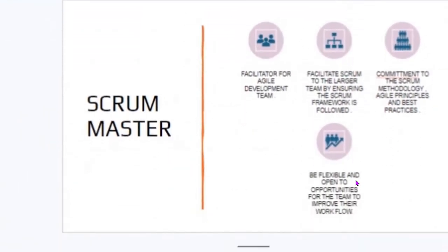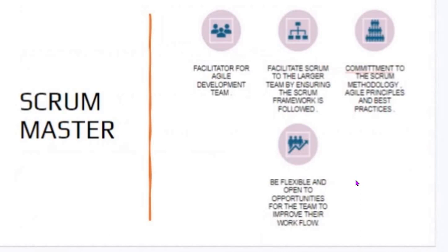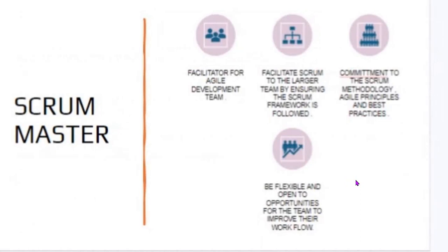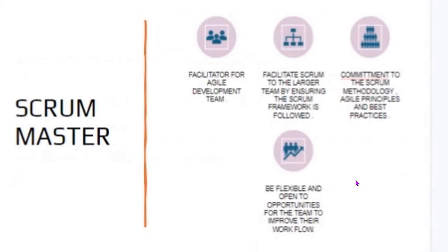What is the role of Scrum Master? A Scrum Master is a facilitator for an Agile development team. It coordinates the Agile development team on the Jira platform. Second, it facilitates Scrum to the larger team by ensuring the Scrum framework is followed and that the whole team adheres to Agile methodology. Third, it ensures commitment to the Scrum methodology, Agile principles, and best practices, making sure the team doesn't deviate while completing a project. Fourth, it is flexible and open to opportunities for the team to improve their workflow. Being a Scrum Master doesn't mean you are the boss — no one is a boss, so you're always open to suggestions from other members to move the team forward and make the workflow move faster.